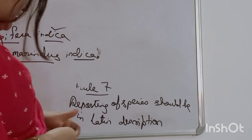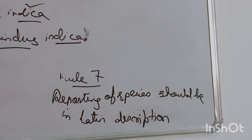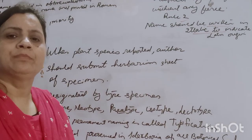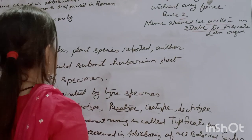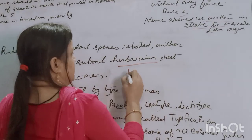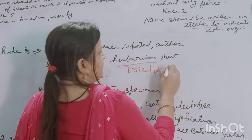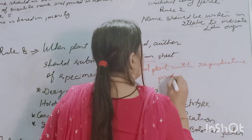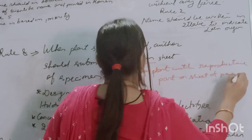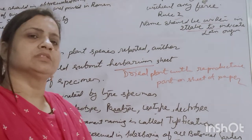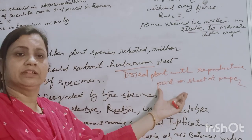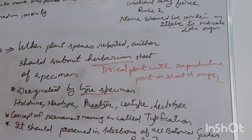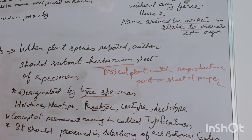Rule seven: Reporting of a new species should be in a Latin description. Whenever a new species is reported from any area, it should be written in Latin. Rule eight: When a plant species is reported, it should be in herbarium sheet form. A herbarium sheet is a dried plant with its reproductive parts mounted on a sheet of paper, so that whenever authors submit it, the plant part can be clearly visualized.